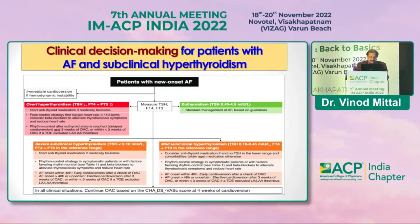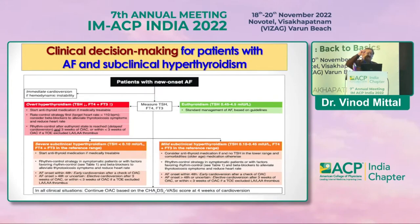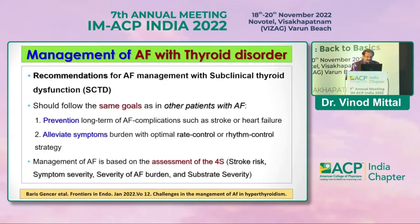When there is mild subclinical hyperthyroidism, we may not be in a hurry to decide on antithyroid medication. The decision depends on other features: if the patient is elderly with other risk factors, we start antithyroid treatment; otherwise, we treat only the AF. This is an important distinction to understand.